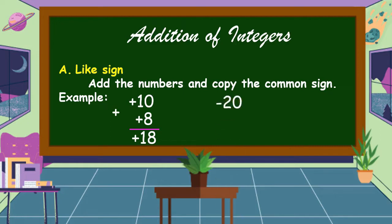Another example: negative 20 plus negative 15. Our addends are both negative, so we're going to add the numbers. 20 plus 15 is equal to 35, then copy the common sign which is negative. Therefore, the answer is equal to negative 35.